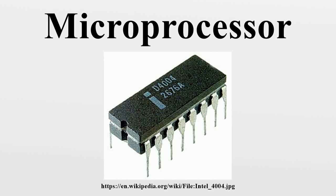A microprocessor is a computer processor that incorporates the functions of a computer's central processing unit on a single integrated circuit, or at most a few integrated circuits. The microprocessor is a multipurpose, programmable device that accepts digital data as input, processes it according to instructions stored in its memory, and provides results as output. Microprocessors contain both combinational logic and sequential digital logic, and operate on numbers and symbols represented in the binary numeral system.